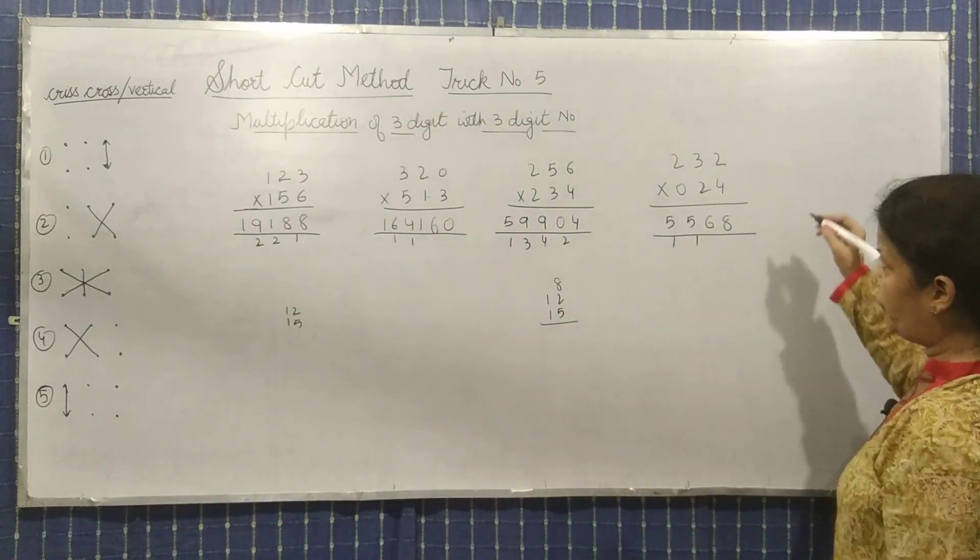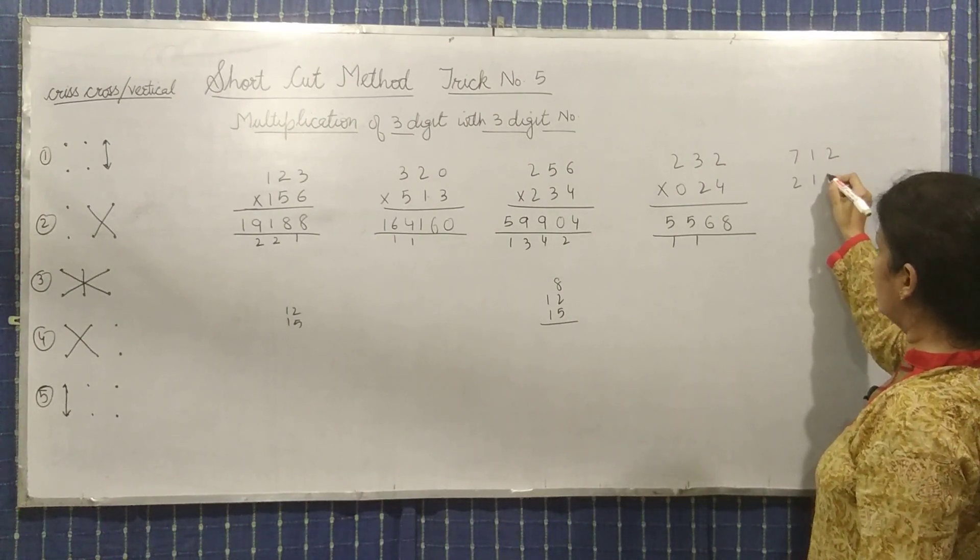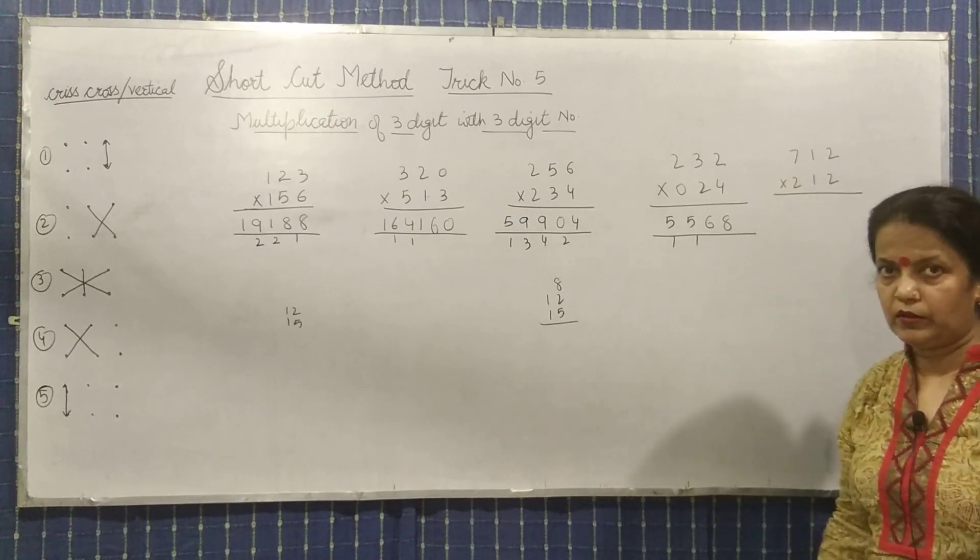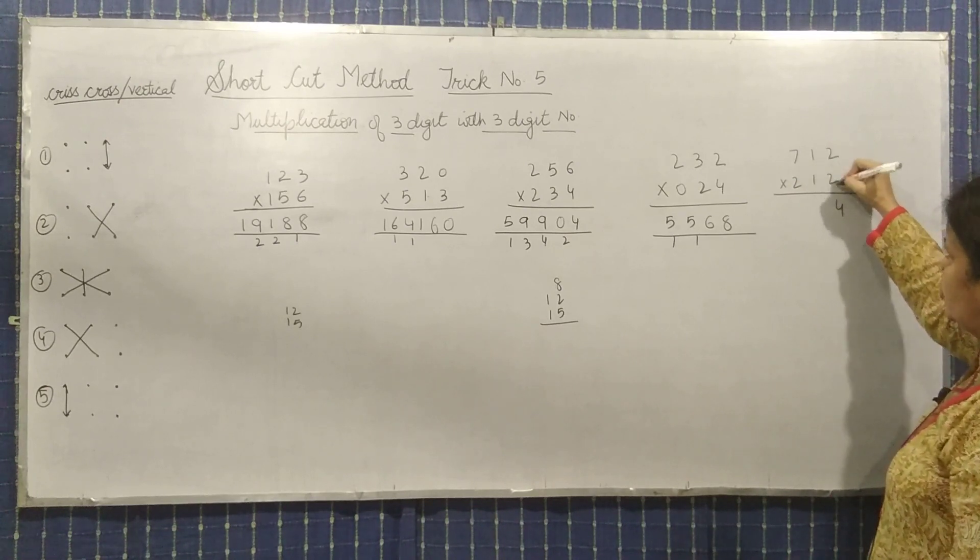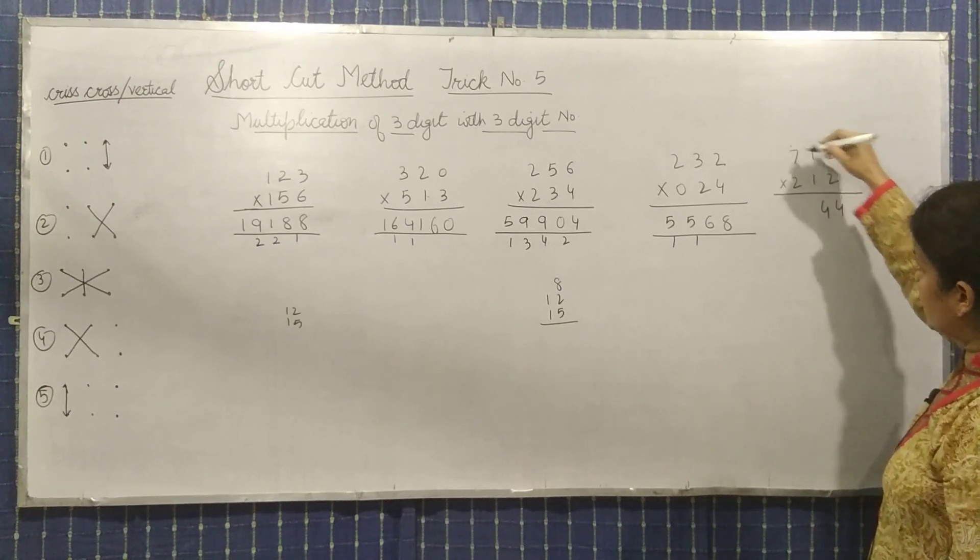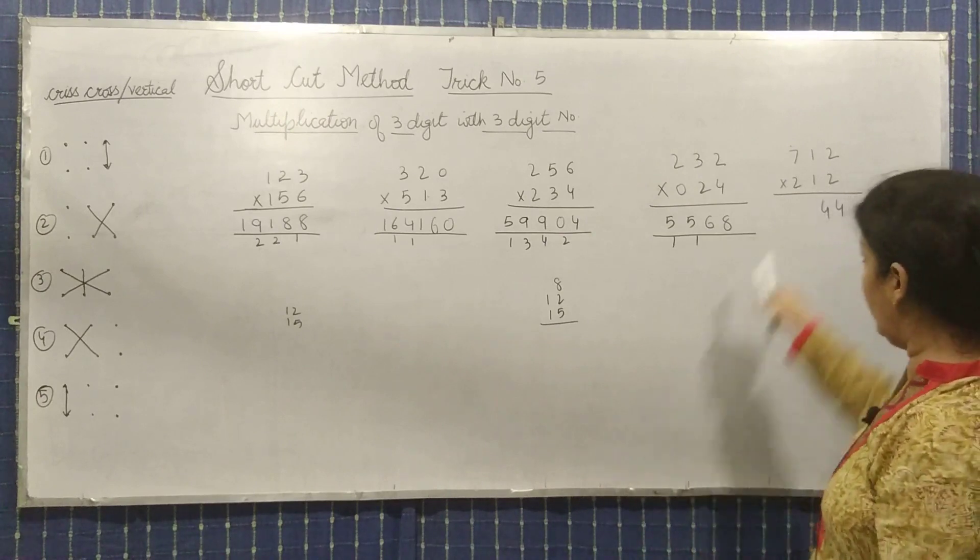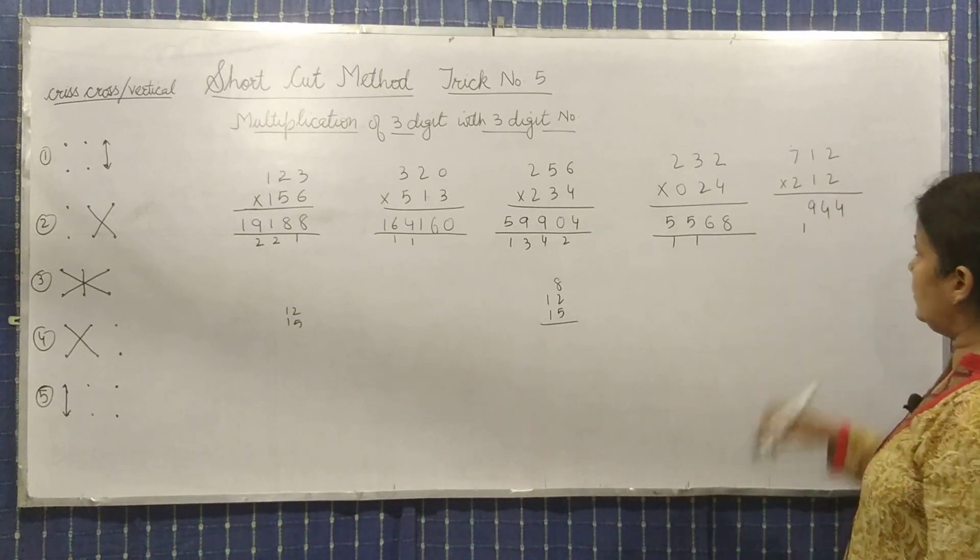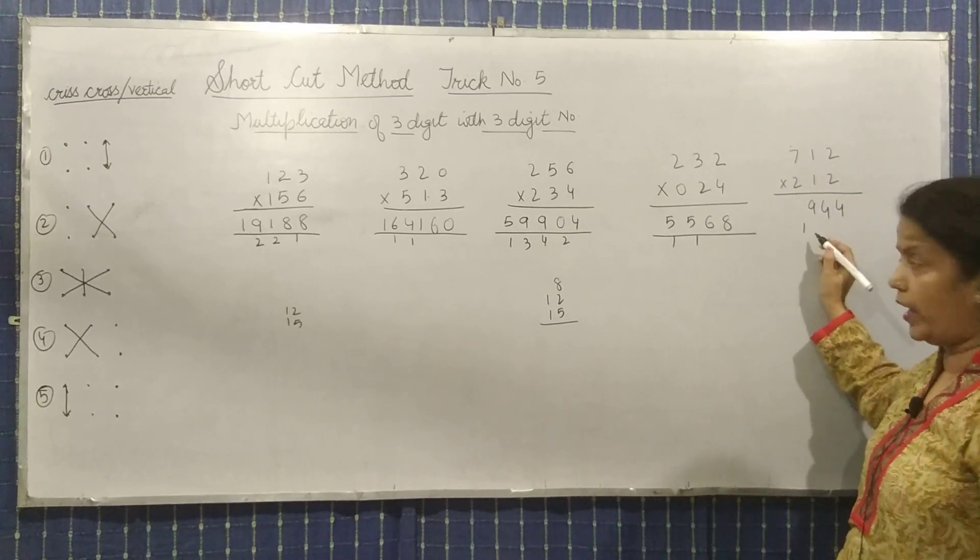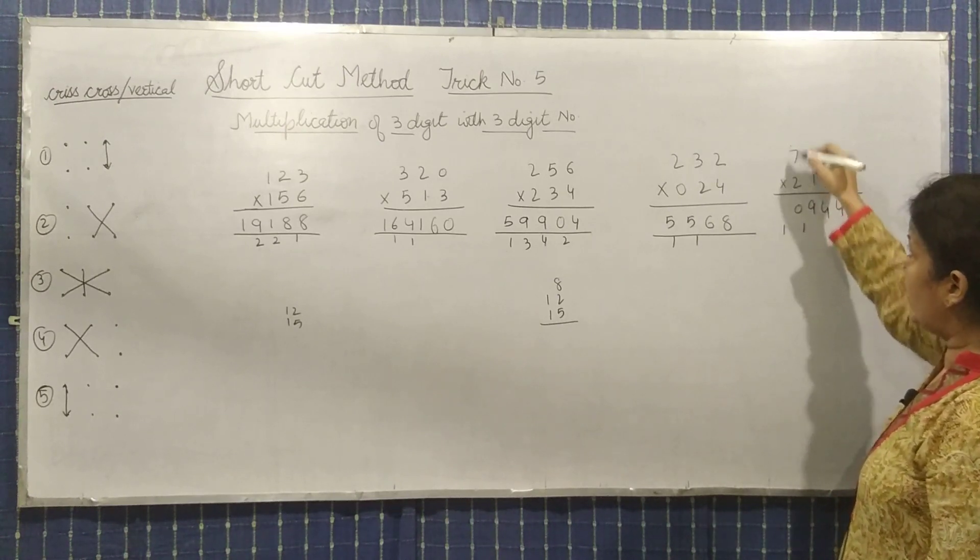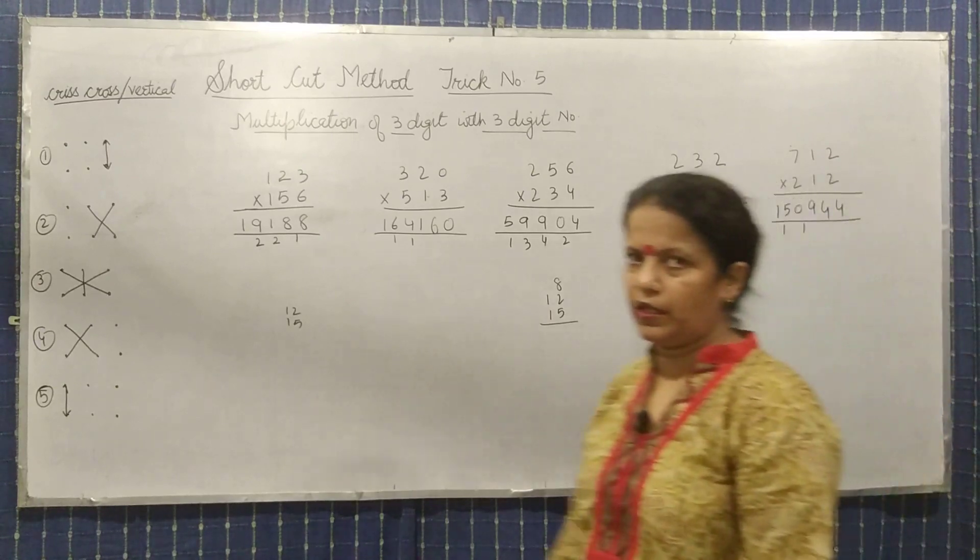Take one more for better understanding. Seven, one, two. Two, one, two. Multiply it. Vertically: four. Cross: two plus two is four. Now extreme cross: seven into two is fourteen, plus four is eighteen, plus one is nineteen, one. Multiply these two: seven plus two is nine and carry one makes ten, one carry. Now multiply these two together: fourteen plus one is fifteen. So this is the answer.